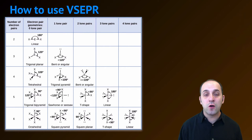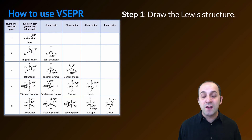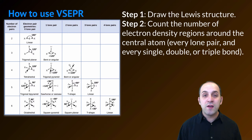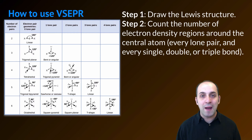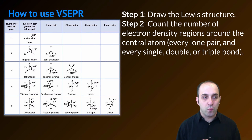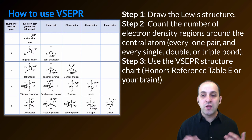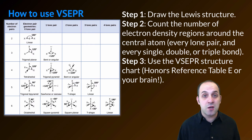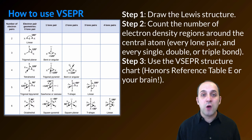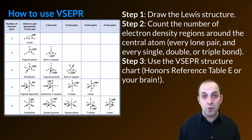In order to use this chart, you're going to need to do a couple of things. The first thing is to draw the Lewis structure. Once you have a valid structure, you're going to need to look at the central atom and count the number of electron density regions around it — that's every lone pair, every single bond, every double bond, and every triple bond. Each one of those counts as one region. Once you know that, you're going to use the chart to figure out the overall shape. It is important to understand that you need to be able to use this chart to figure out all of the structures on it if you're given a Lewis structure for a particular molecule.